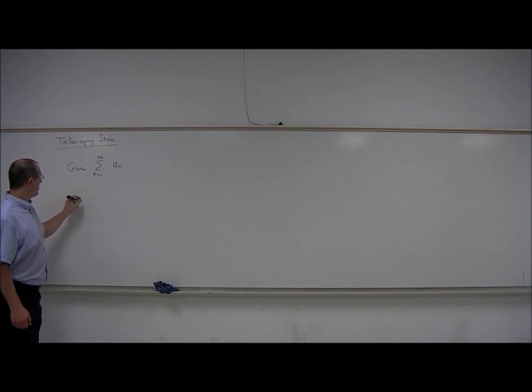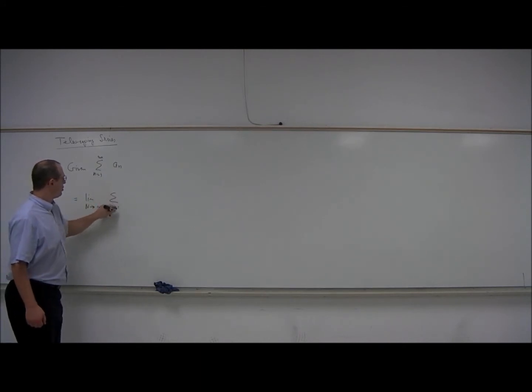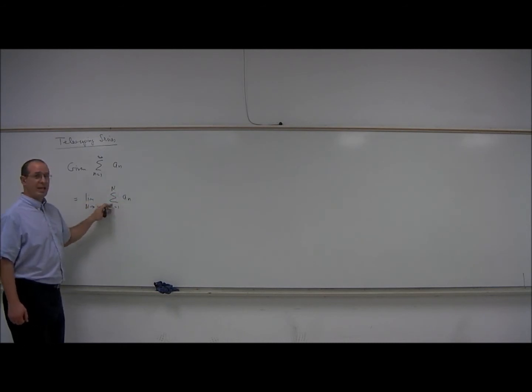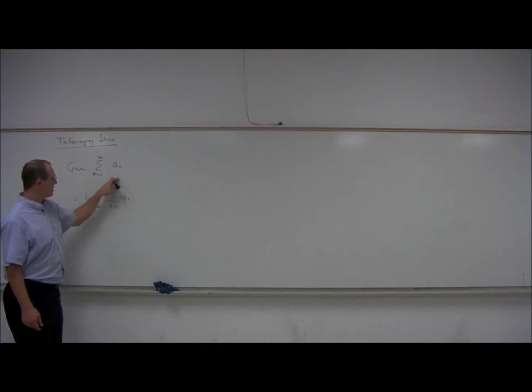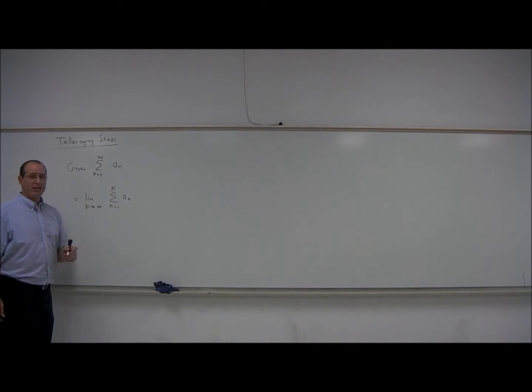This means the limit as capital N goes to infinity of this summation, n goes from 1 to capital N of a sub n. So we turn our infinite sum into a finite sum here, just capital N terms. n goes 1, 2, 3, 4, and stops at capital N, whereas this one goes on forever. So this one makes complete sense because it's a finite sum, and then we take the limit as capital N goes to infinity.